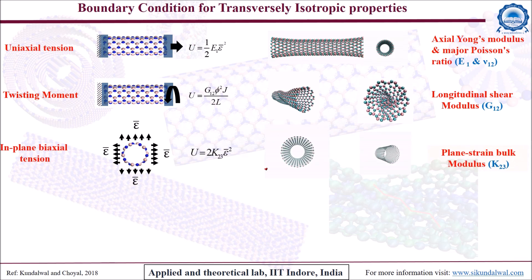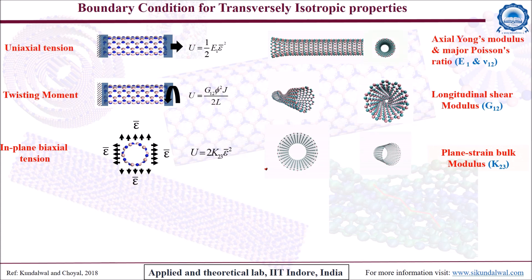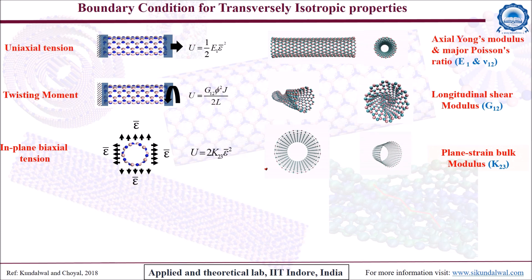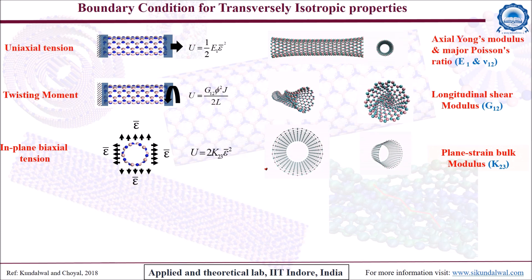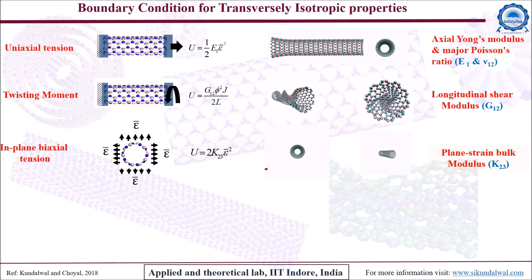A nanotube was subjected to a two-dimensional plane strain condition. To satisfy the plane strain condition, both ends of the BNNT were constrained in the axial direction so that its length remains unchanged. The plane-strain bulk modulus of a nanotube can be obtained using a given relation.